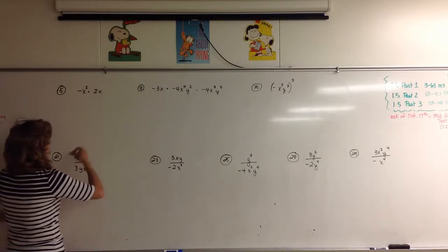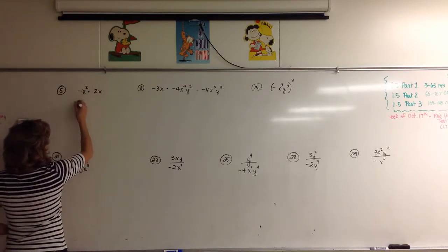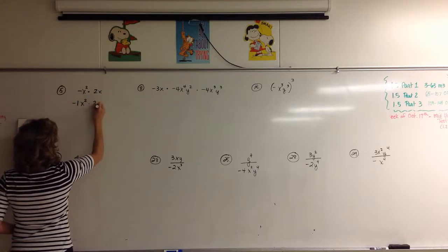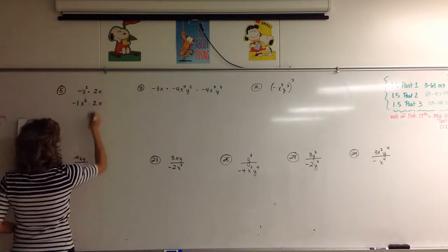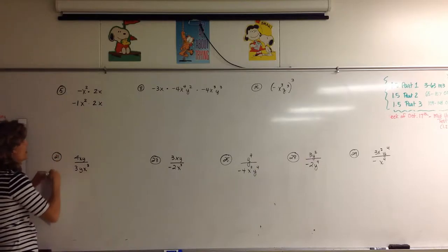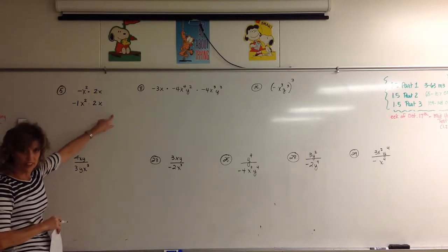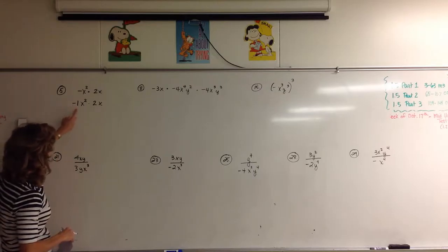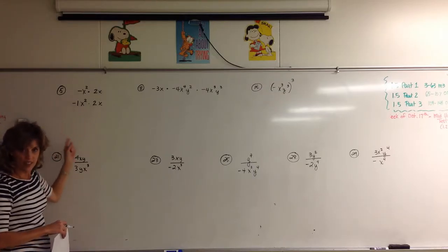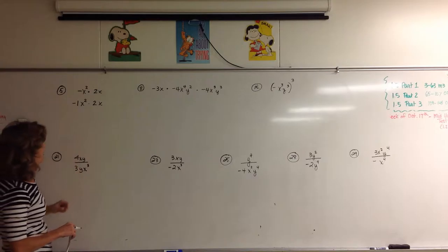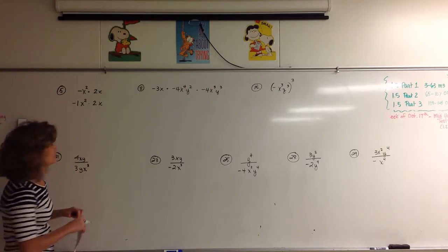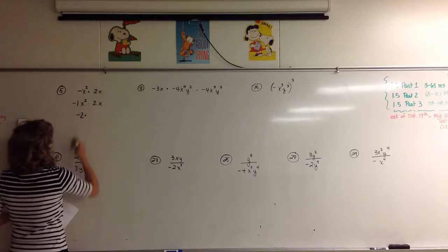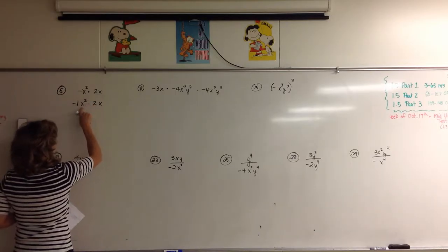The rule is we add exponents any time we're multiplying and the bases are the same. So number five on this homework problem on exponent laws — we're going to think of this negative as being a negative one times x squared times two times x. We're multiplying four things, so we're going to multiply the things that make sense to multiply, like negative one times two.